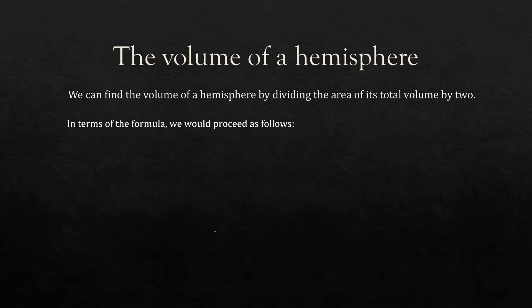In terms of the hemisphere we can find the volume of a hemisphere by dividing the area of its total volume by 2. So in terms of formula we would proceed as follows.